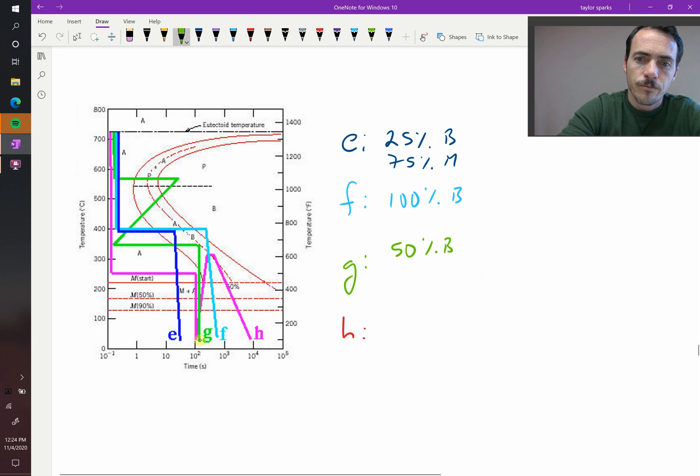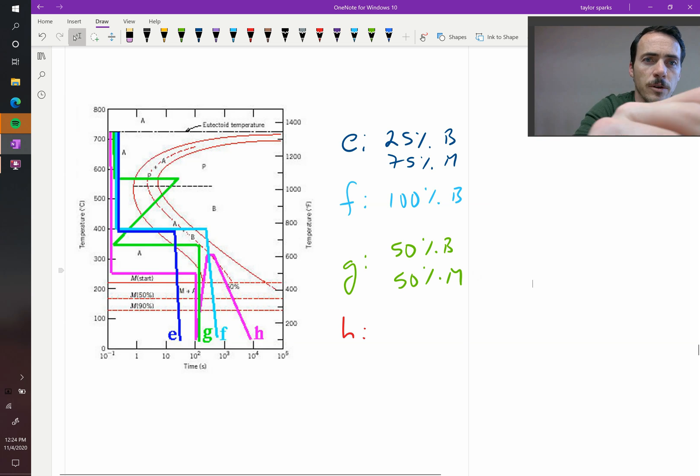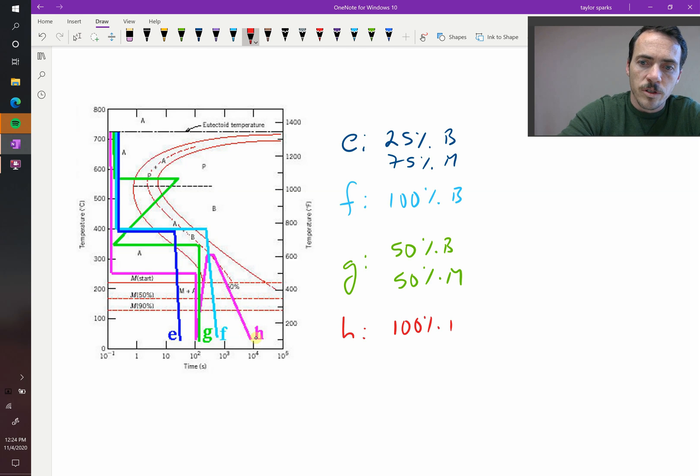And then H, they hold it down to here. They now hold it at this temperature. Just before it touches the line, they quench it, so now you have pure martensite, 100%, and then they heat treat it up to this relatively low temperature for a while, and then they bring it down. That is a recipe for tempered martensite, so we're going to get 100% tempered martensite.